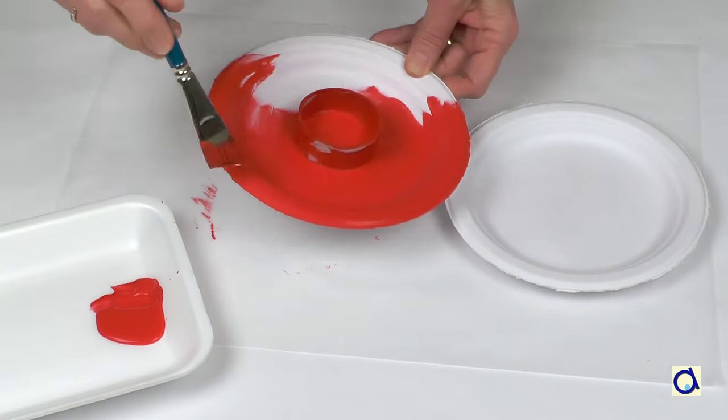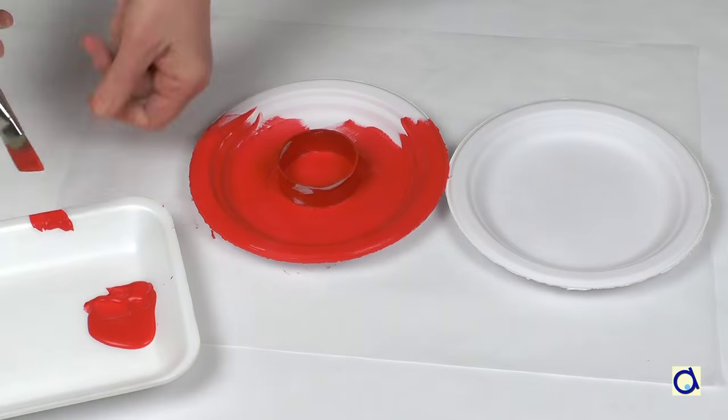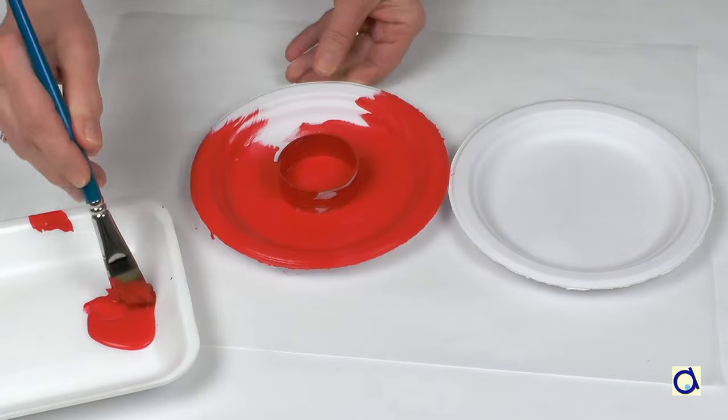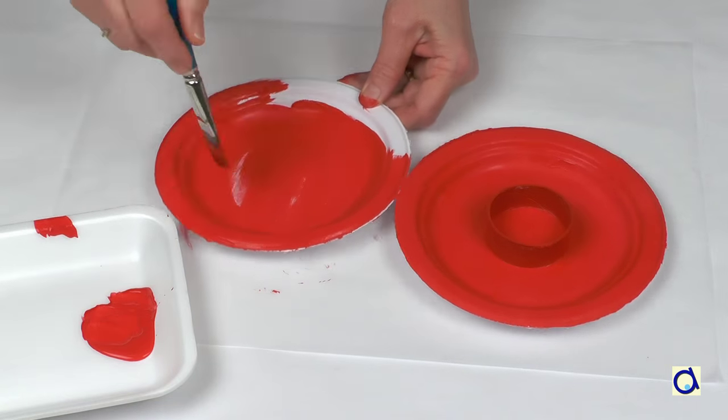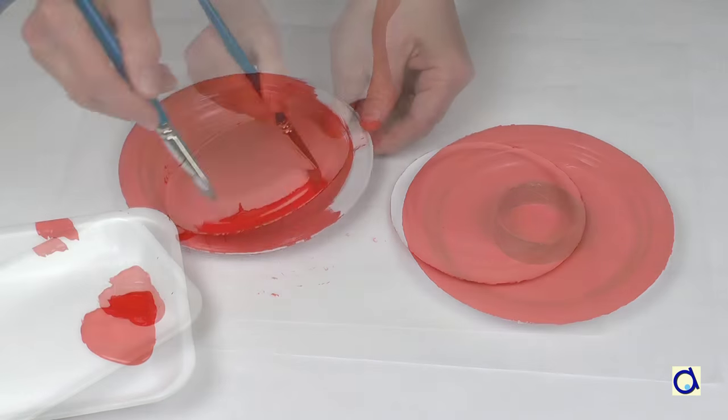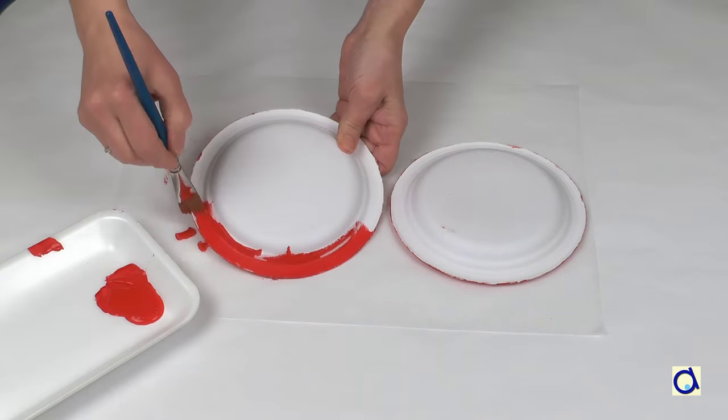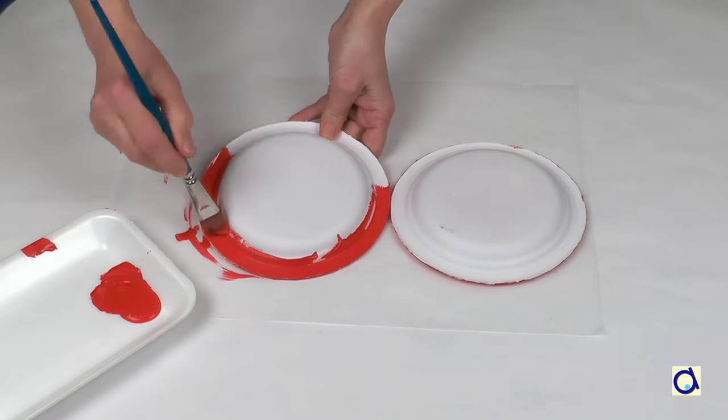When the glue is dry, paint both sides of each plate in a beautiful bright red. Red is a lucky colour in the Chinese culture. If necessary, paint several coats of paint to hide the white of the plates.